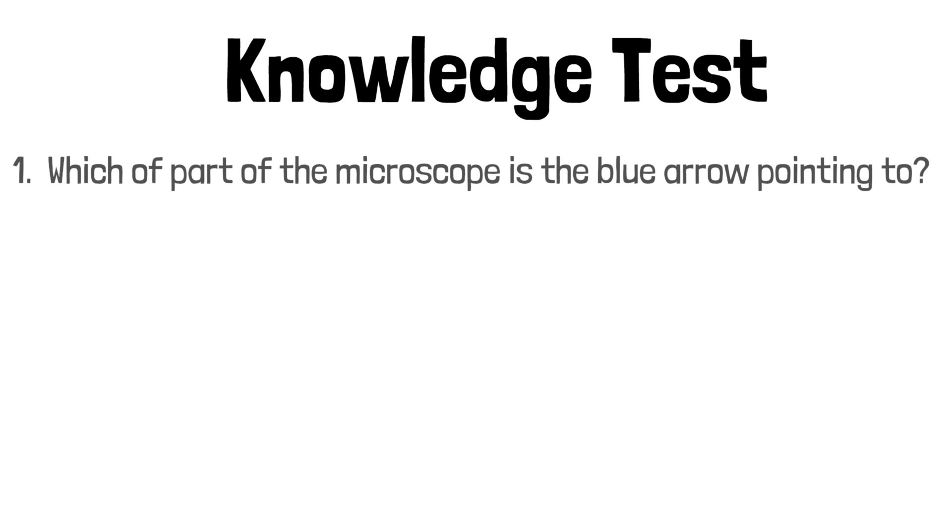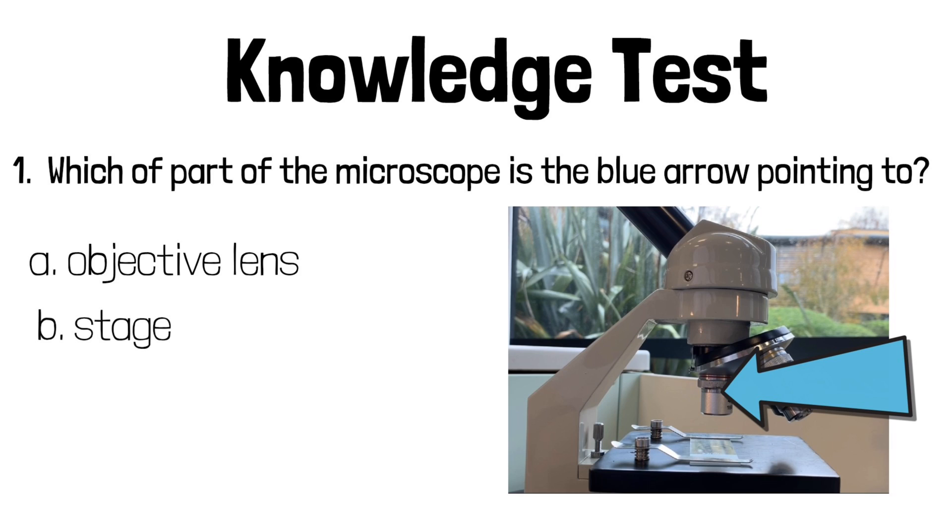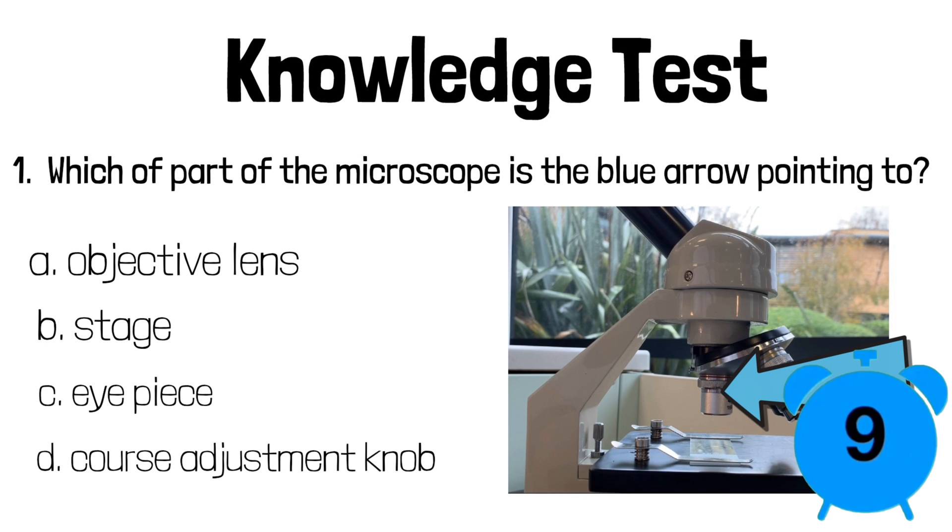Okay, it's time to test your knowledge of what we've just covered. You've got five multiple choice questions with 10 seconds in between. So here's question one. Which part of the microscope is the blue arrow pointing to? Is it a) the objective lens, b) the stage, c) the eyepiece, or d) the coarse adjustment knob? It was the objective lens.